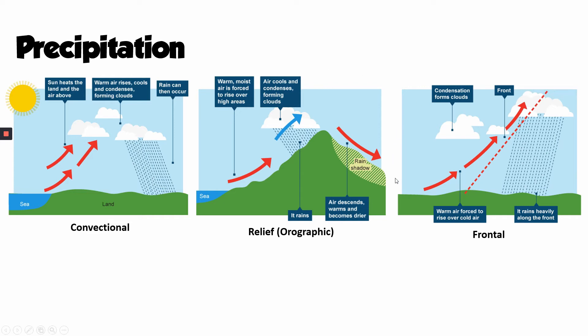Deserts like the Atacama are in the rain shadow of the Andes, and the Gobi Desert in Asia is in the rain shadow of the Himalayas. It's not uncommon to find very dry conditions on one side of a mountain range and wet conditions on the other side.